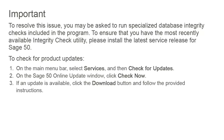To resolve this issue, you may be asked to run specialized database integrity checks included in the program. To ensure that you have the most recently available integrity check utility, please install the latest service release for Sage 50 accounting. To check for product updates, on the main menu bar, select Services and then Check for Updates. On the Sage 50 online update window, click Check Now. If an update is available, click the Download button and follow the provided instructions.